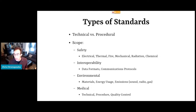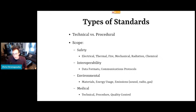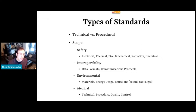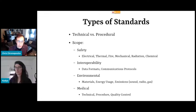It's worth thinking about classifying standards into different types because we need to treat them a little bit differently. First of all, there's technical standards versus procedural standards. A lot of standards have to do with how an organization operates — especially if it has to do with information security or quality control, how many people you have at different stages of the pipeline checking for errors — versus technical standards, which would be numerical quantitative standards for the technical specifications of a product. The scope varies as well, and that's important. We've been talking about electrical safety, but we could also talk about thermal safety, fire, mechanical failure modes, radiation, chemical safety. Standards for all these could be important potentially for open hardware projects. Interoperability and compatibility is a huge category of standards as well.